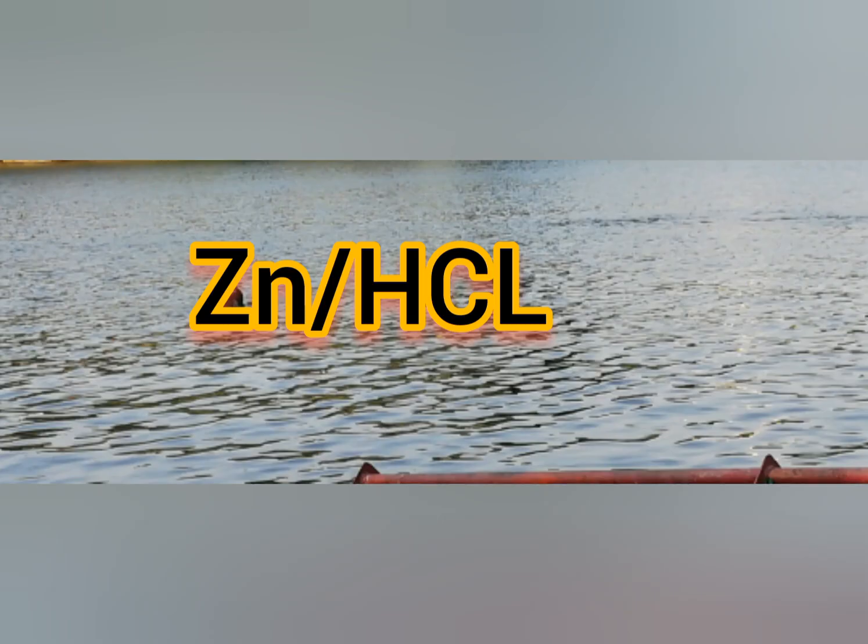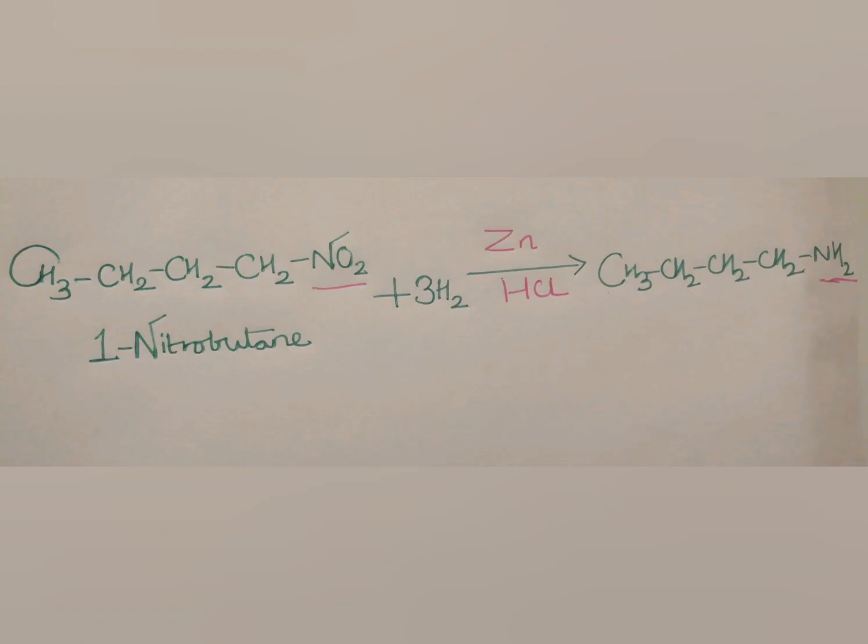The next reagent is zinc in HCl. It is also used for conversion of nitro group into amine group. This example shows that 1-nitrobutane is converted into N-butylamine in presence of zinc and HCl.